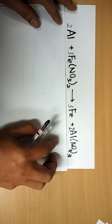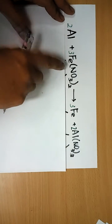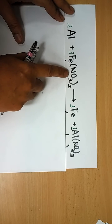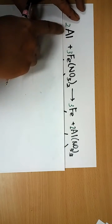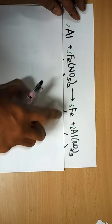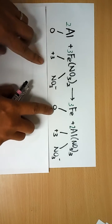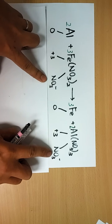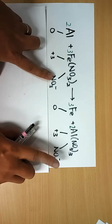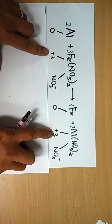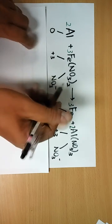What about a more complex example? Notice that NO3- appears on both sides unchanged, so we leave it alone — its charge didn't change, so the oxidation states of nitrogen and oxygen are the same. What changed is the metal ions attached. The element aluminium starts at 0.